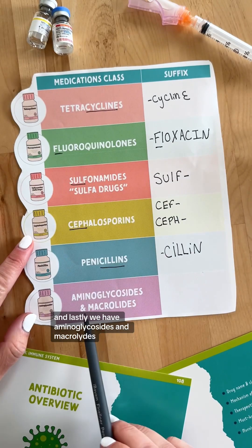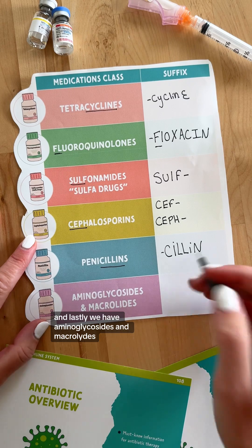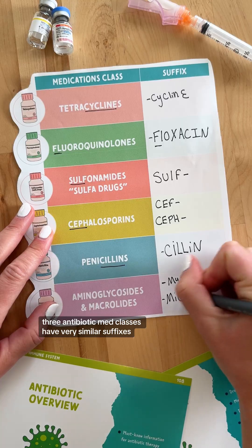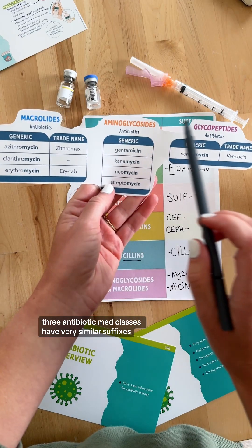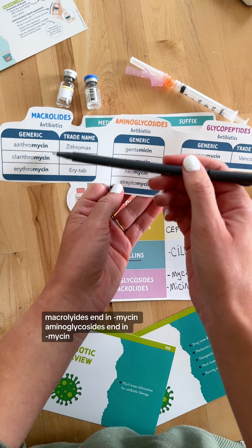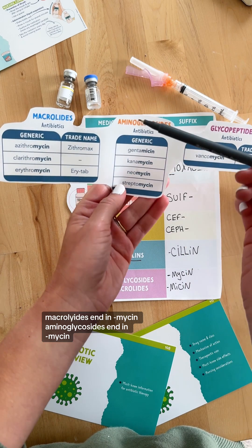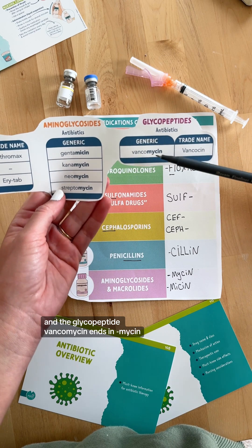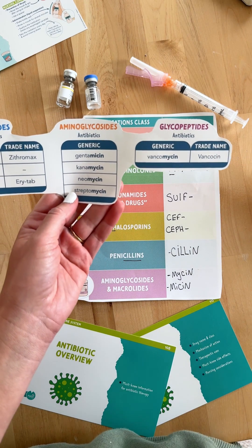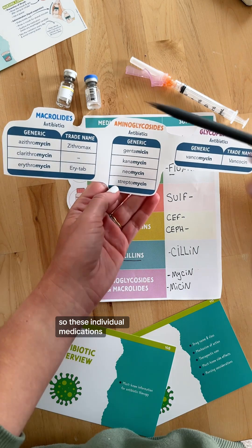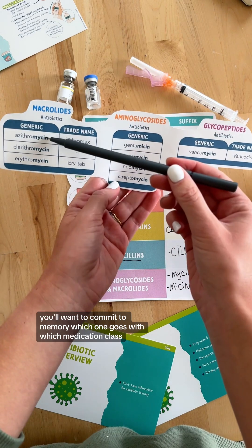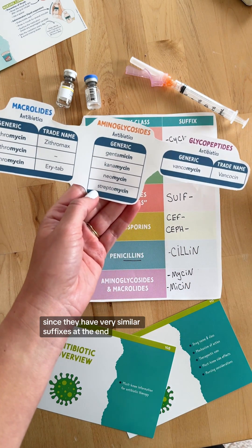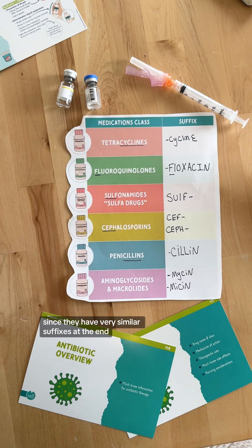Lastly, we have aminoglycosides and macrolides. These end in the suffix -mycin. It's important to note that three antibiotic medication classes have very similar suffixes: macrolides end in -mycin, aminoglycosides end in -mycin, and the glycopeptide vancomycin also ends in -mycin. So these individual medications you'll want to commit to memory — which one goes with which medication class — since they have very similar suffixes.